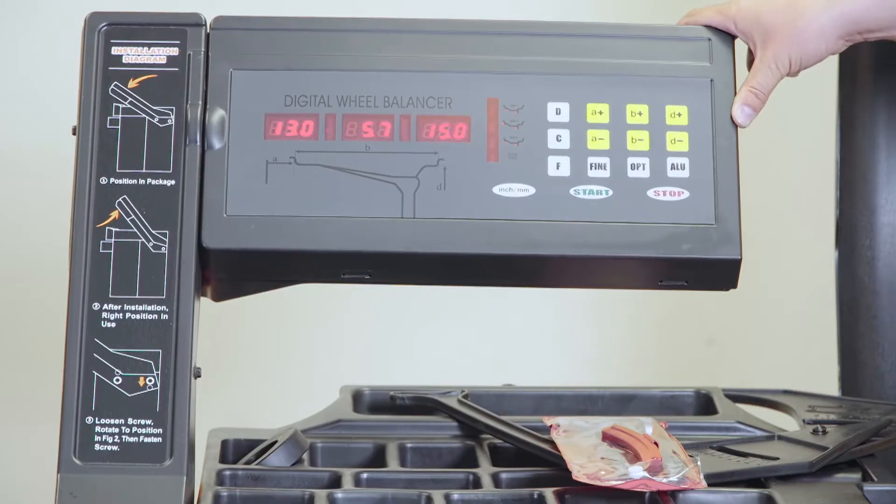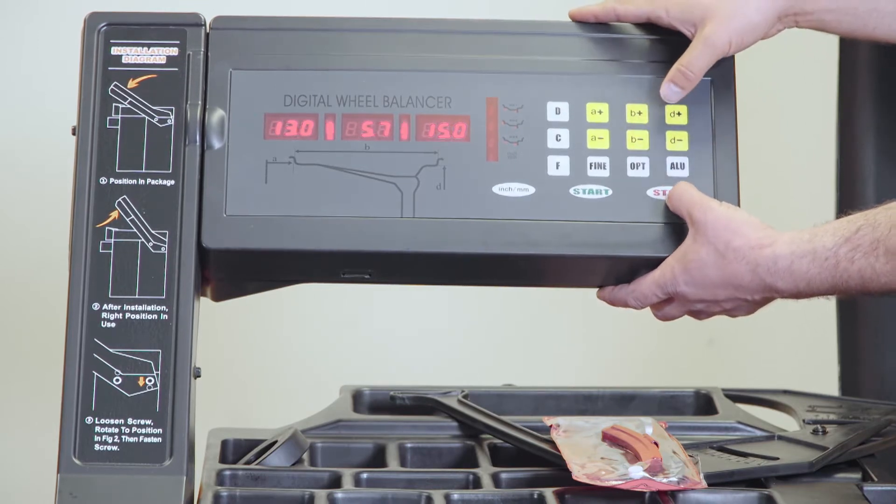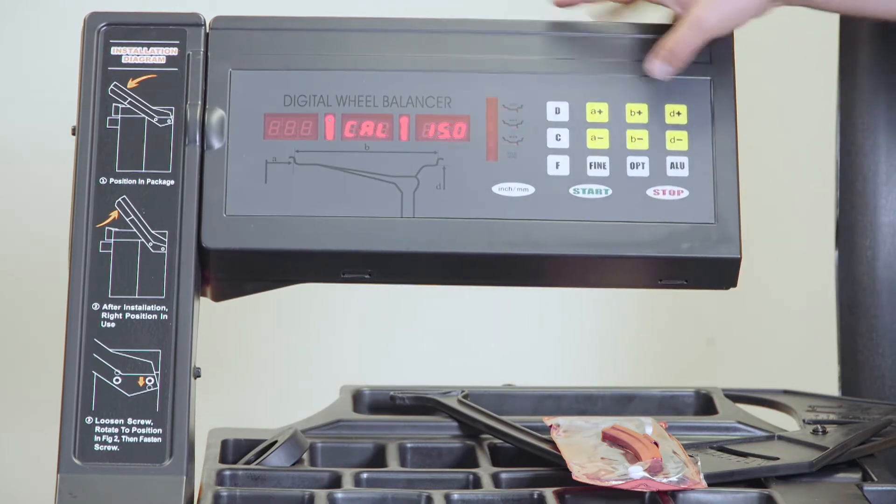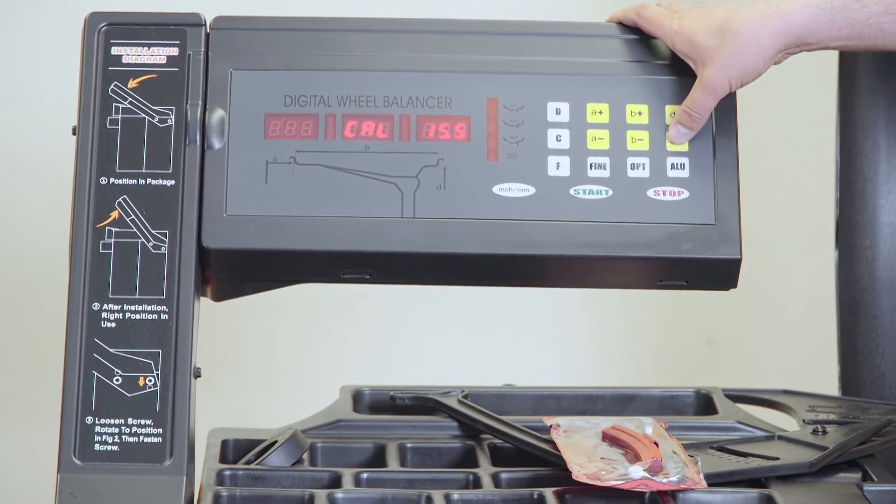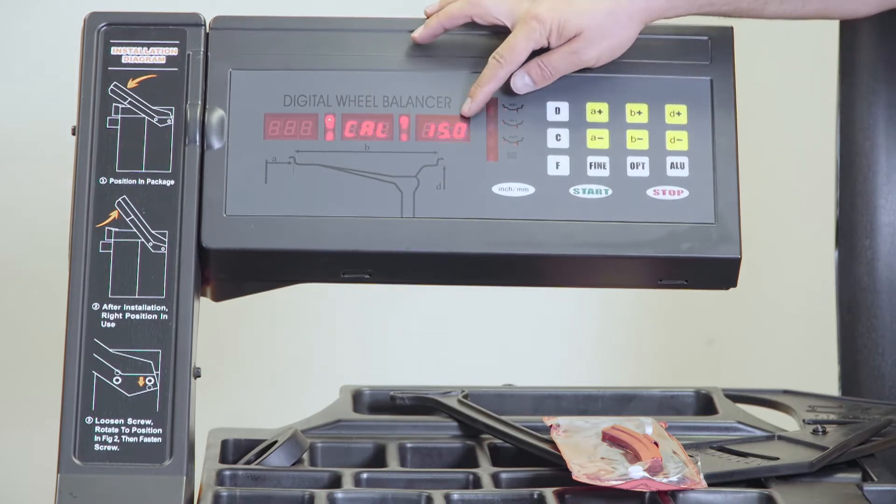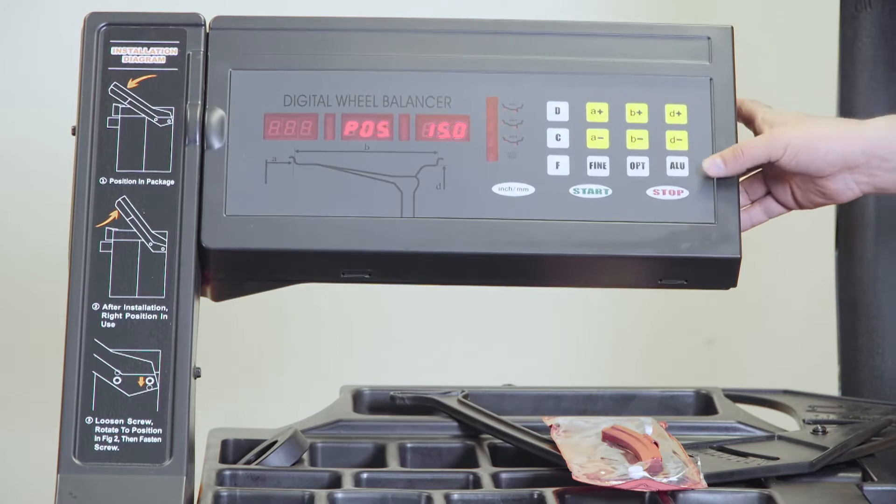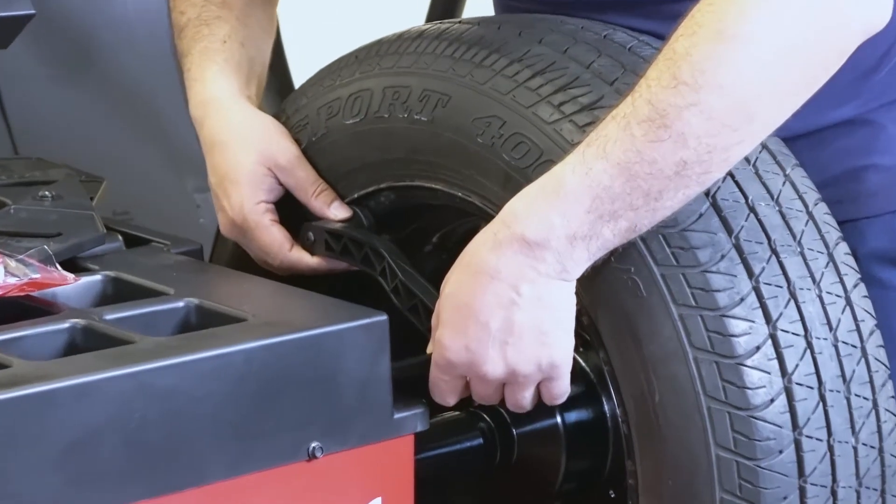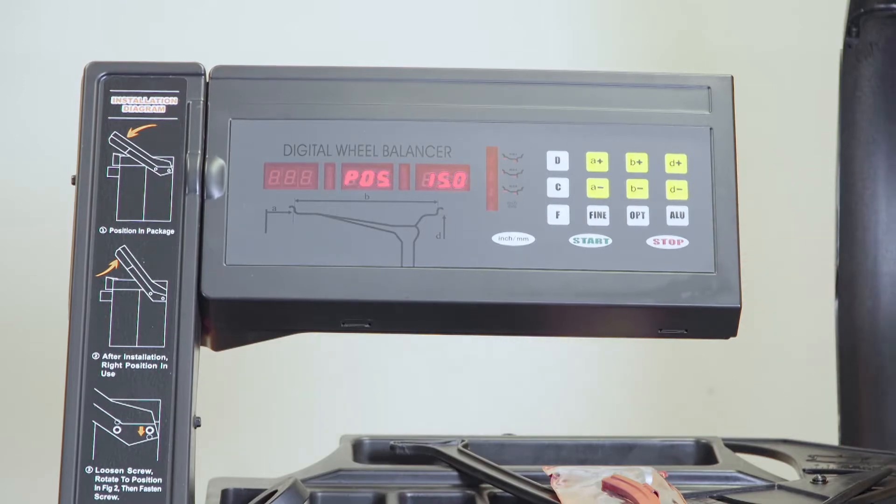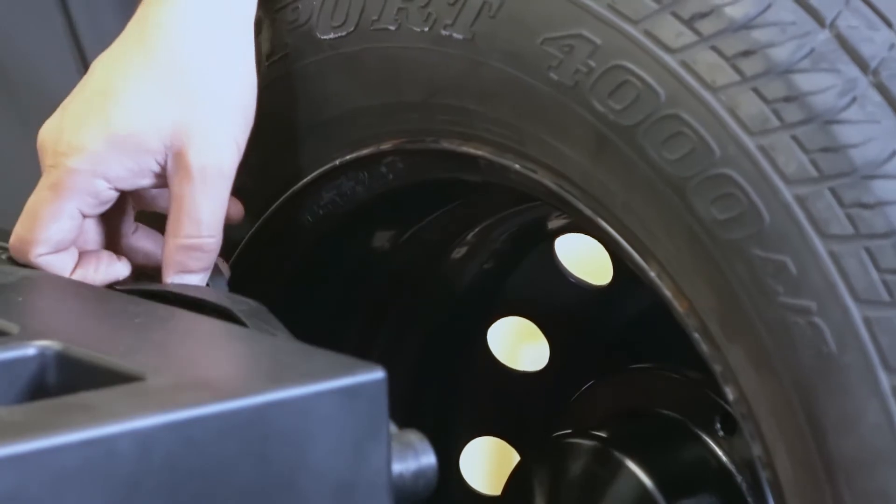Once you've installed the tire, to set the diameter, calibrate the diameter, you hold the stop and press the optimize button. Then you can adjust the diameter with these plus D plus and D minus. Once you've adjusted the diameter, confirm. Then you pull the ruler, touch the edge of the rim, and confirm. You have to wait until you see all the zeros on the screen and then put the ruler back.